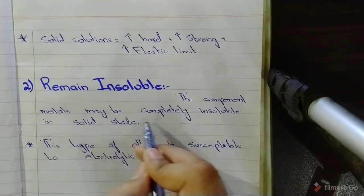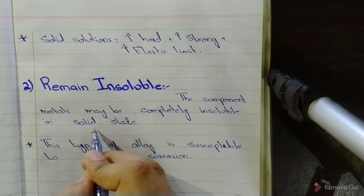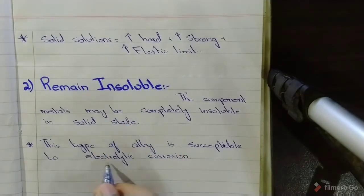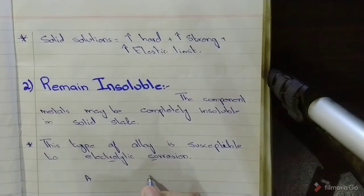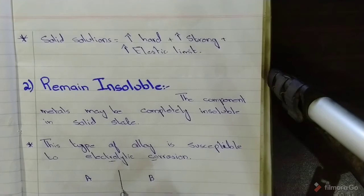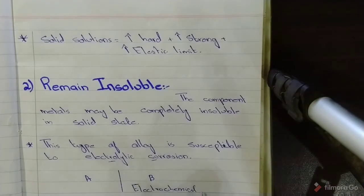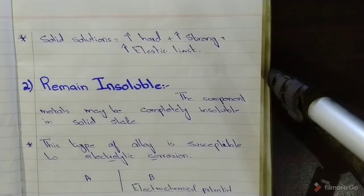This type of alloy is susceptible to electrolytic corrosion. Why? Because of the presence of pure metal A and pure metal B. So due to the difference in their electrochemical potential, there is a risk of electrolytic corrosion.